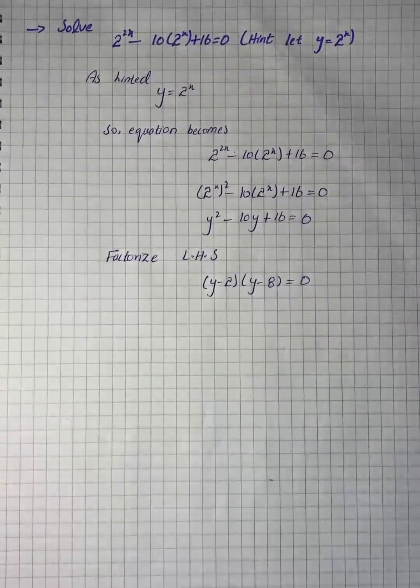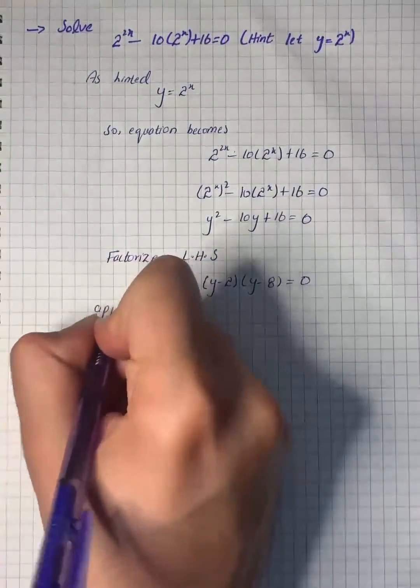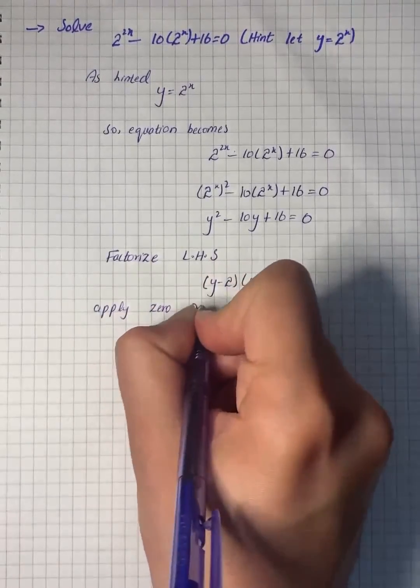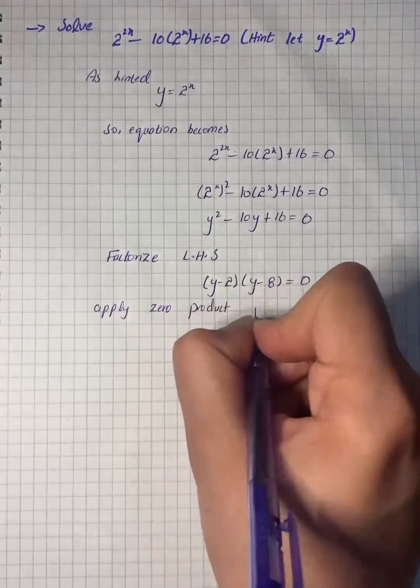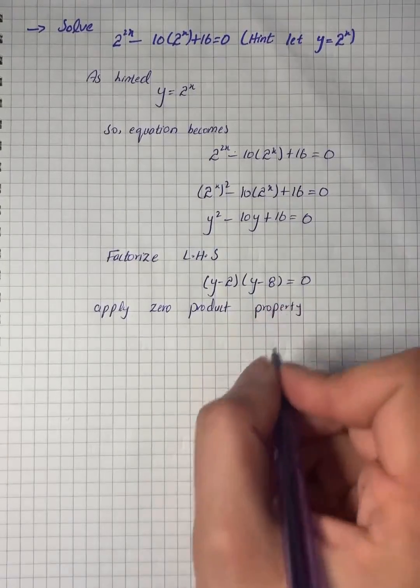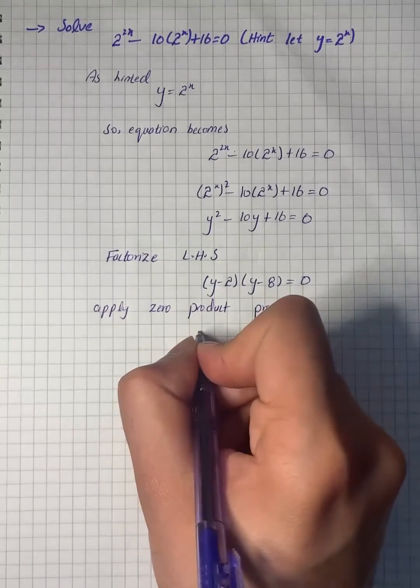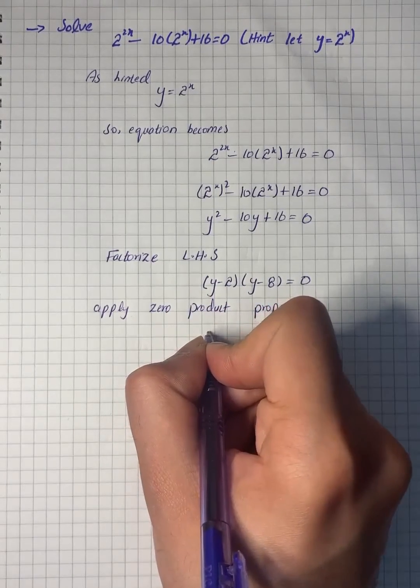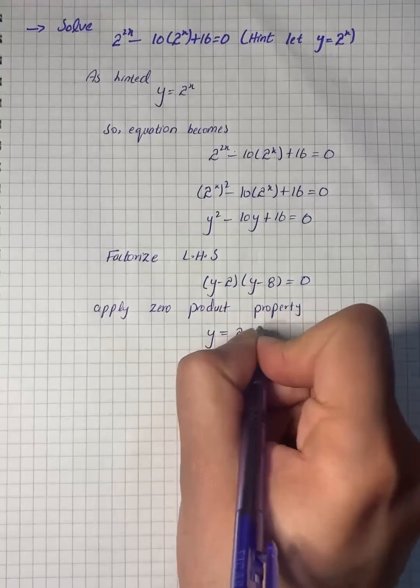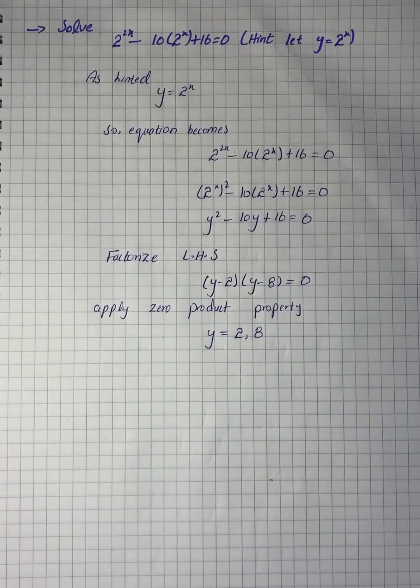Now we will apply the zero product property. So y = 2 and y = 8. Now we will solve for x by back substituting.